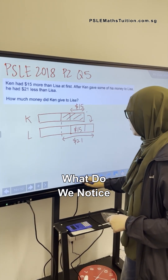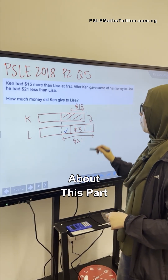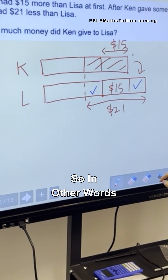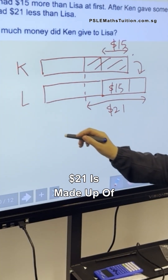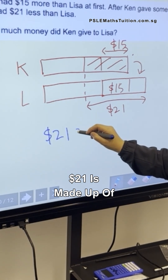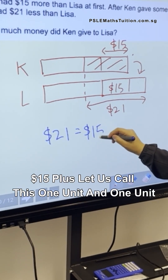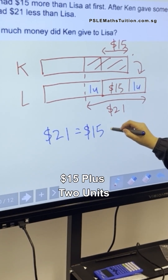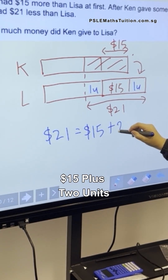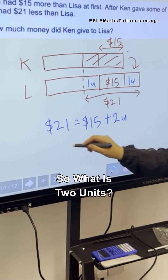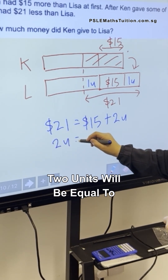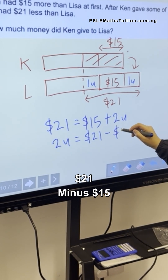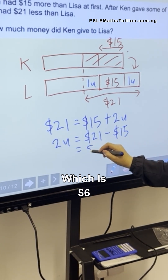What do we notice about this part and this part? They are actually the same. So in other words, $21 is made up of $15 plus — let's call this one unit and one unit — $15 plus two units.